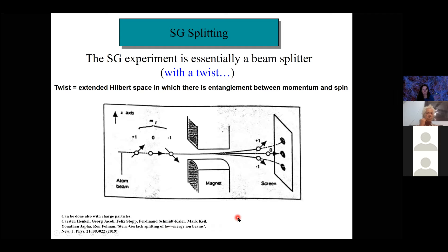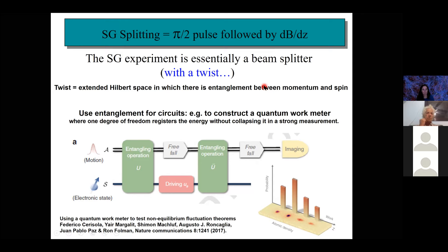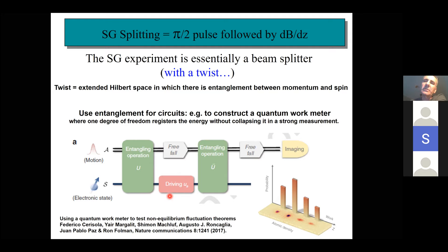If you just use the splitting or entanglement between spin and motion, you still don't have an interferometer, but you can do interesting things. For example, an idea from Juan Pablo Paz's group in Argentina: turn this into a work meter. You have work done on the internal degrees of freedom of the atom, but you can't measure it directly without collapsing the energy. If you entangle it to an auxiliary qubit before and after the work is done, you can measure that auxiliary degree of freedom and get the full quantum work in one image.